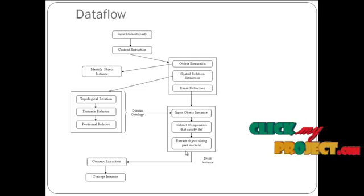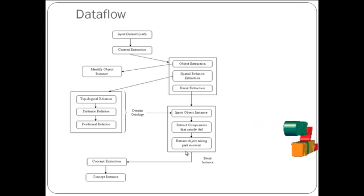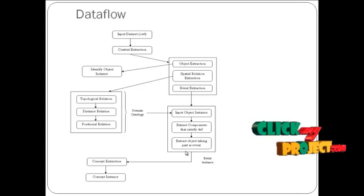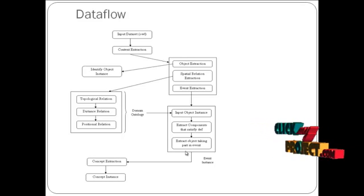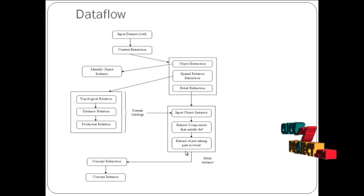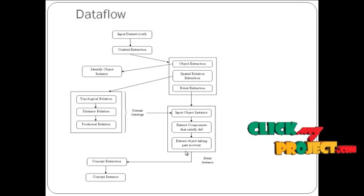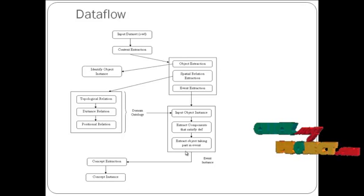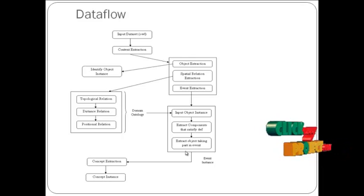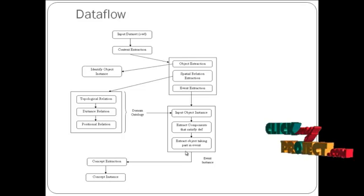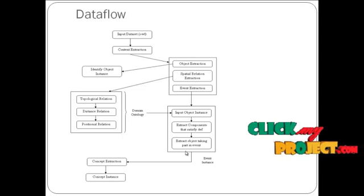After that, we find out the event extraction. For that event extraction, we give an object as an instance. By means of that instance, we are going to extract the components. Then we extract the objects in place of events. By means of this event extraction, we have categorized the data into objects, events, and then subjects, which in turn are used to generate the query in a very affordable manner. At last, we get the whole input OWL ontology web language and paragraph data by means of the concept extraction, and we get the concept instance of each and every object.